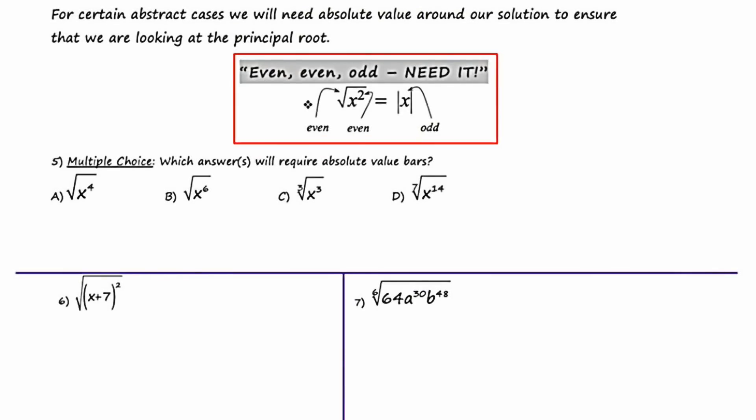We're on slide number two, and it says that for certain abstract cases, we will need absolute value around our solution to ensure that we're looking at the principal root. This is always confusing for students, so at my school we've come up with a gimmick — a chant. The chant is: even, even, odd, need it. What that means is if your index is even, the power of your exponent on the inside is also even, and your answer ends up being to an odd power, then you're going to need absolute values around your answer to ensure you're looking at the principal root.